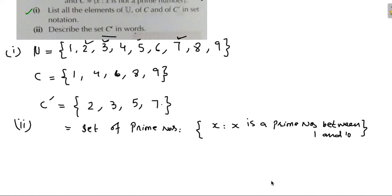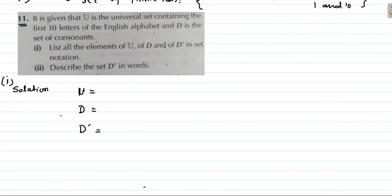Now question 11: It is given that U is the universal set containing the first 9 letters of the English alphabet, and D is the set of consonants. List all the elements of U, D, and D' in set notation. The universal set elements are: a, b, c, d, e, f, g, h, i.